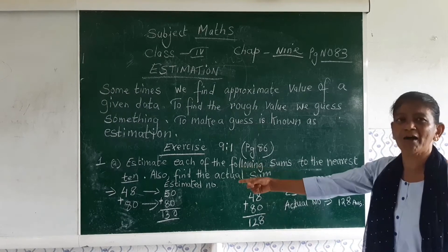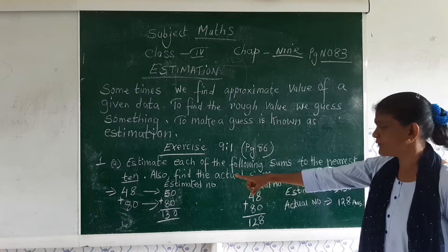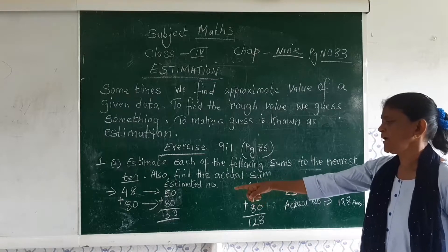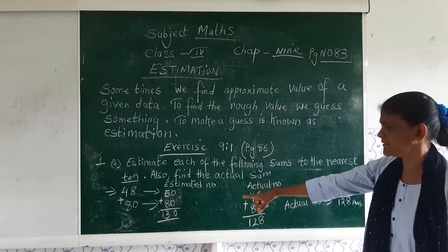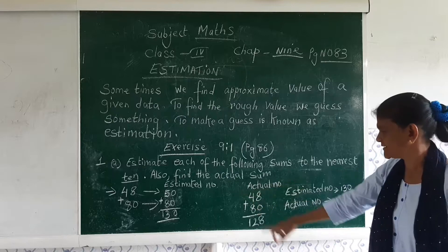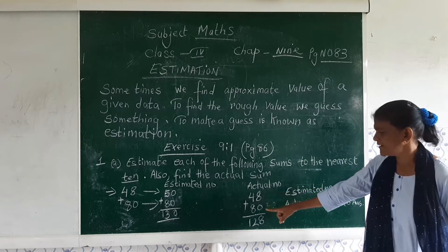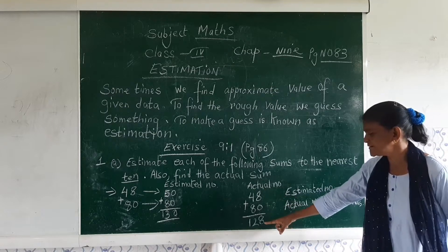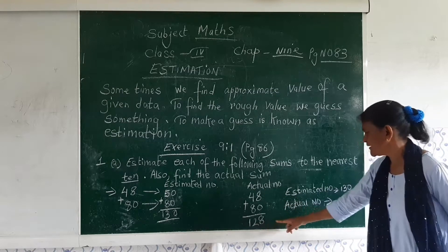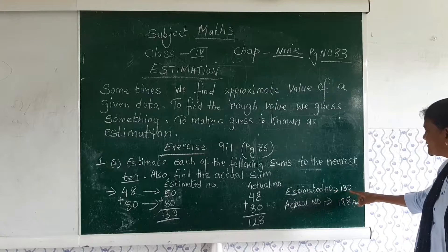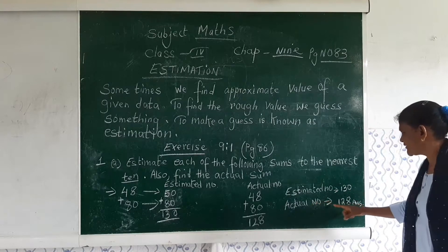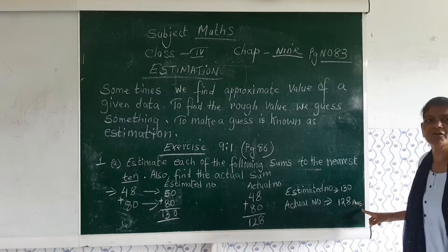It is greater than 5, so I have converted into 50 and 80 as usual 80. So we get the result 130. The actual number is 48 as it is and 80, so we get the result here 128. The estimated number is 130 and actual number is 128. This is your answer.